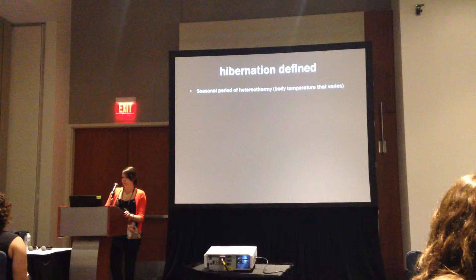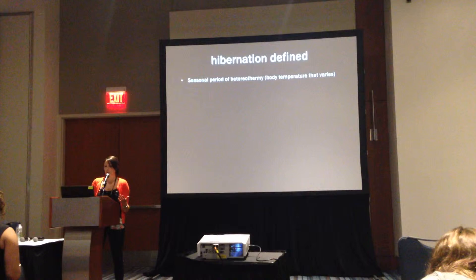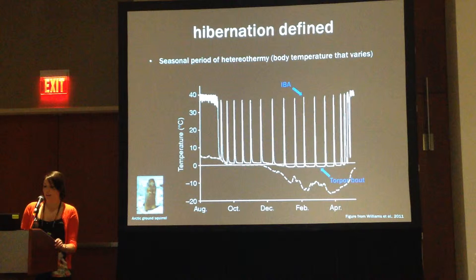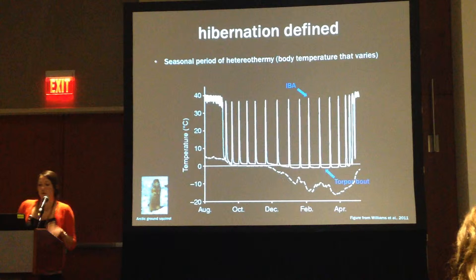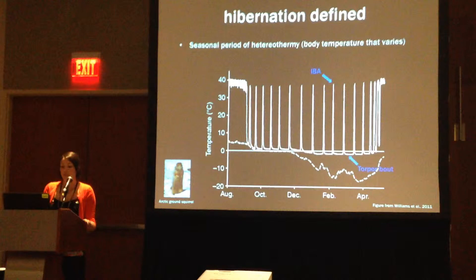Hibernation is the seasonal period of heterothermy that allows animals to save 70% to 85% of energy they would have burned through had they remained active during the winter. It is a controlled depression in metabolic rate and body temperature called torpor, punctuated by brief periods of re-warming known as intra-bout arousals. This graph depicts body temperature of an arctic ground squirrel throughout the year. The torpor bouts typically last between one to two weeks, after which the animal arouses for about 15 hours and then returns to torpor.